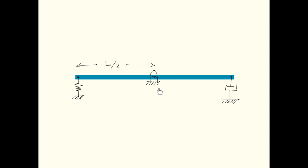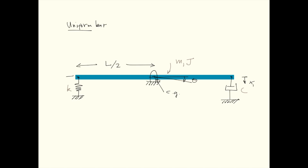Consider a uniform bar with the center of rotation at the mid-span of the bar. At one end of the bar we have a spring with stiffness constant K, and at the other end is a damper with damping constant C. The bar has mass M and second mass moment of inertia J. The bar rotates with angle theta, and let's define the displacement of the damper as x1 and the displacement of the spring as x2.